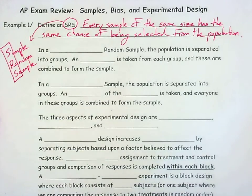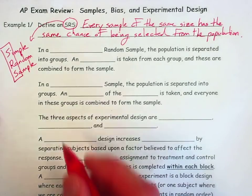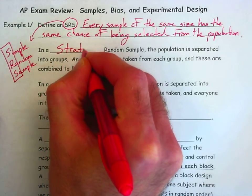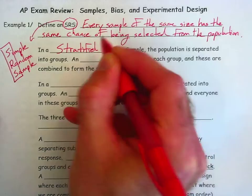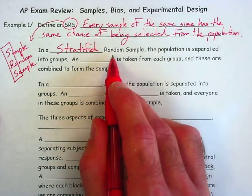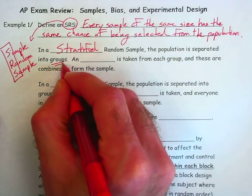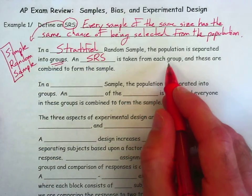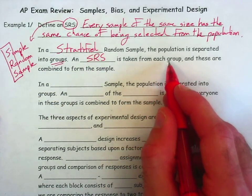Now there are other types of samples that use randomness, such as a stratified random sample. In a stratified random sample, the population is separated into groups, and then an SRS is taken from each group, and these are combined together to form the sample.